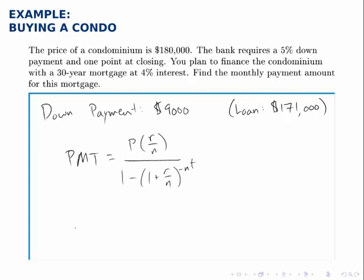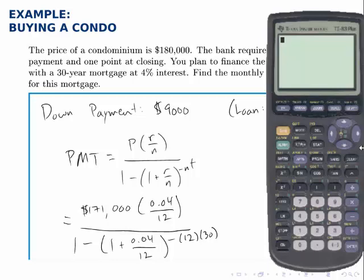To calculate the monthly payment amount, we use the installment loan formula. Here we're given P, the amount of the loan, which is $171,000. We're given R, the interest rate, which is 4%. We're given N — because this is a monthly payment, N is 12. And T is 30 years, because it's a 30-year mortgage.